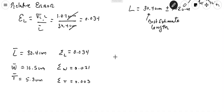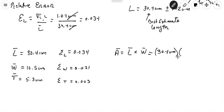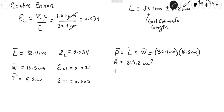Now I want to calculate the area. The mean area equals the mean length times the mean width: 30.4 cm × 10.5 cm = 319.2 square centimeters.